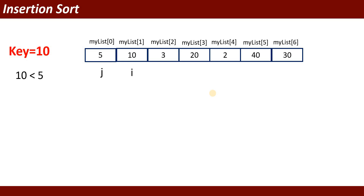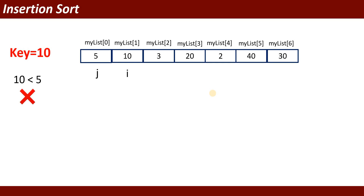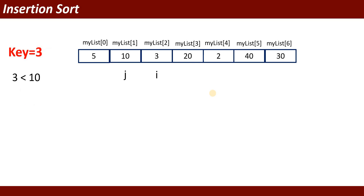We start from position 1, so index number 1. The value at position 1 is 10, so key equals 10. It will check whether the value of key is less than the value of j. The value of key is 10 and value of j is 5. It checks: is 10 less than 5? That is false, so we move to the next position, which is my_list[2].